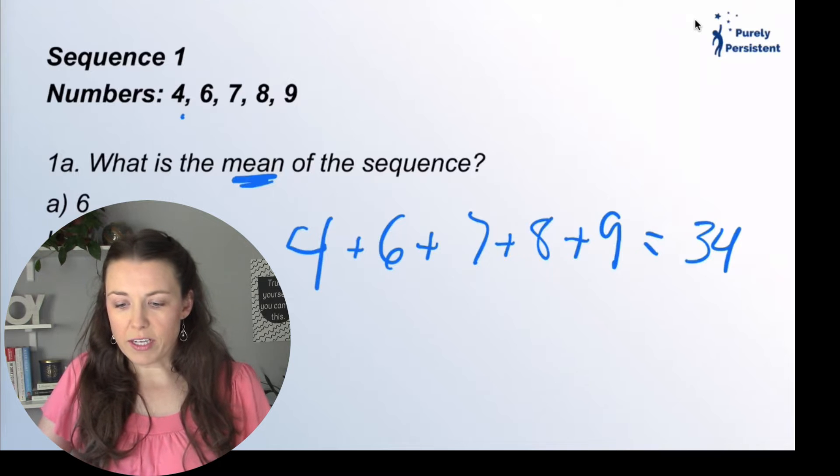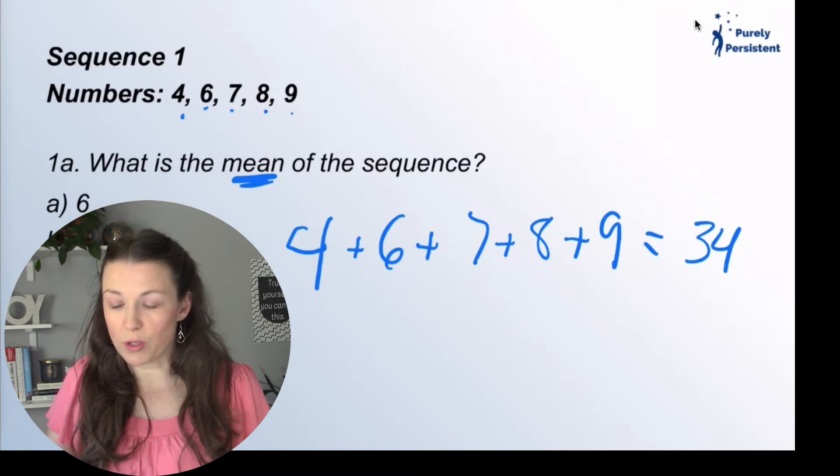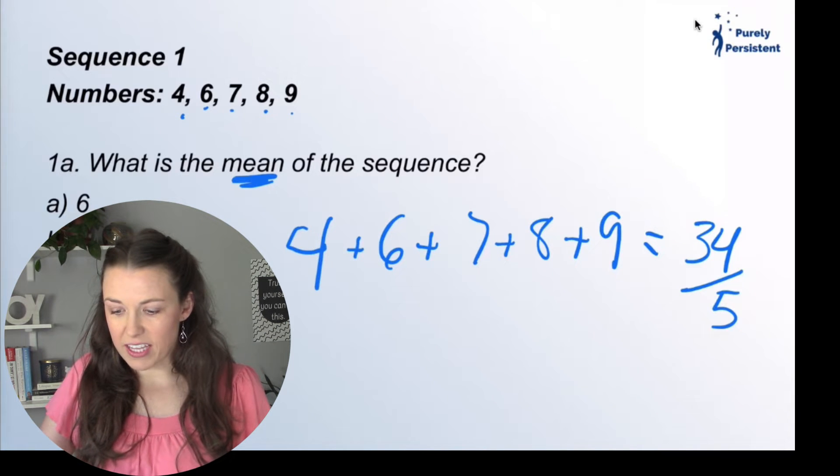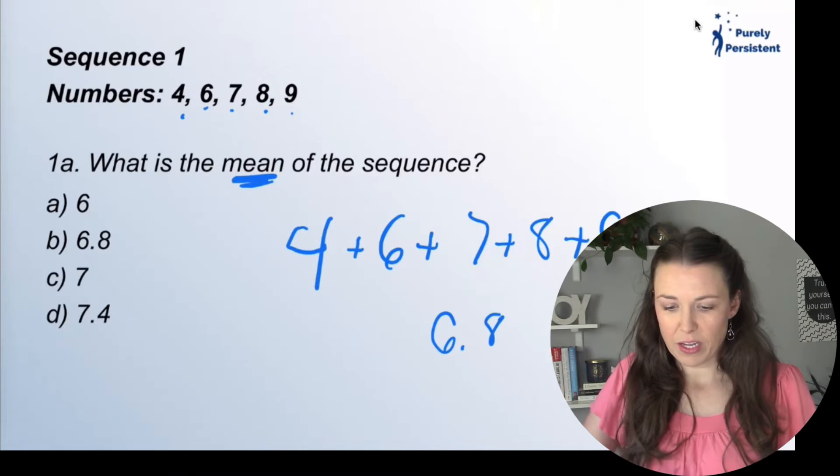So I have one, two, three, four, five numbers total. So I'm going to take 34 and divide that number by five, and I am left with 6.8. So here we go. B is our answer.